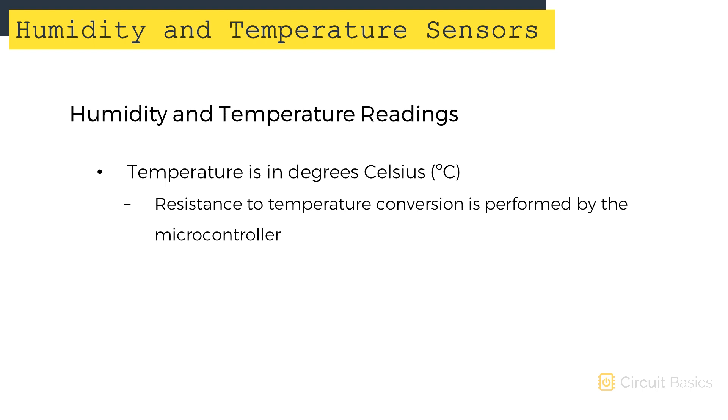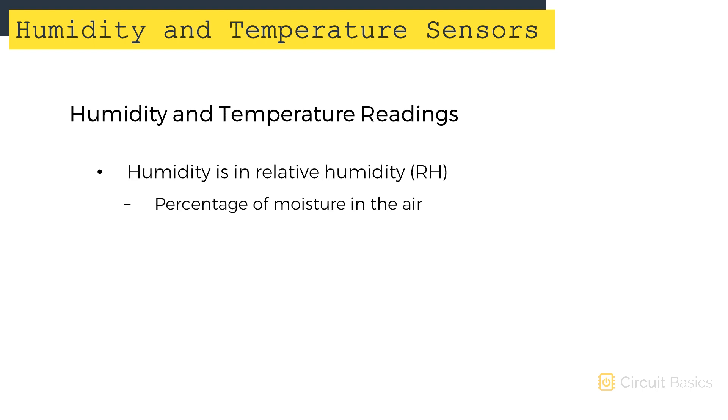The DHT11 provides temperature readings in degrees Celsius. The temperature calculations are performed by the microcontroller on both the standalone and breakout board versions. The humidity is provided in relative humidity. Relative humidity is a measure of the amount of water vapor in air versus the saturation point of water vapor in air. Relative humidity is basically the percentage of moisture in the air. Zero relative humidity means the air is completely dry. 100% relative humidity means the air is at its saturation point. At the saturation point, water vapor starts to condense and forms water drops.